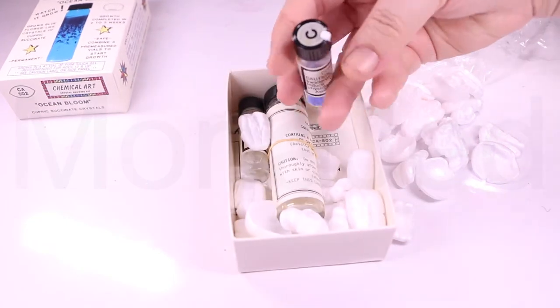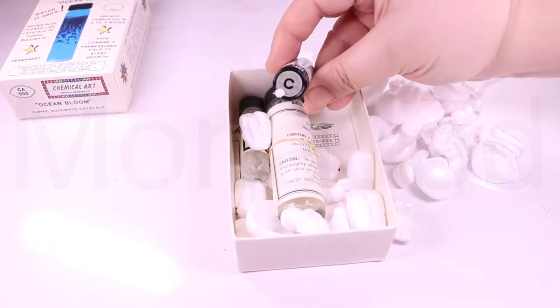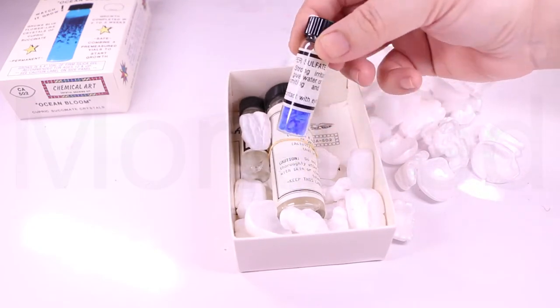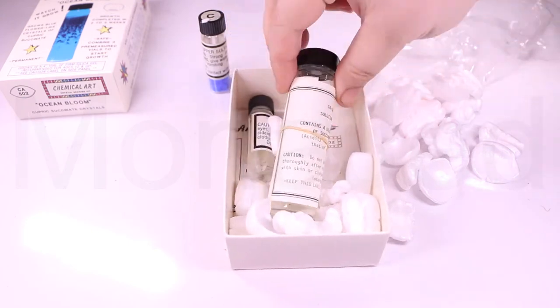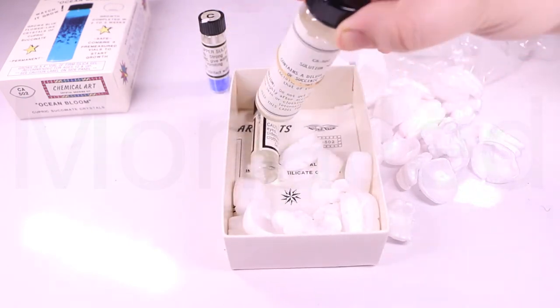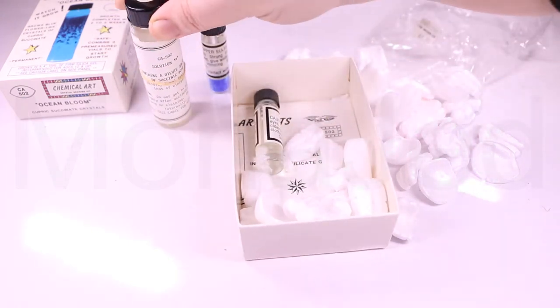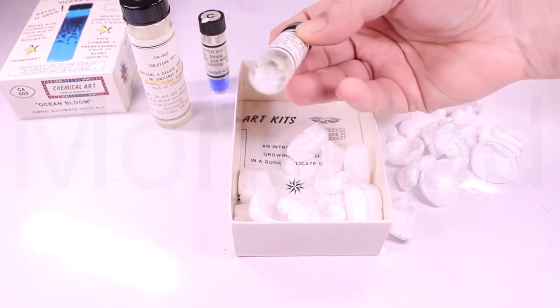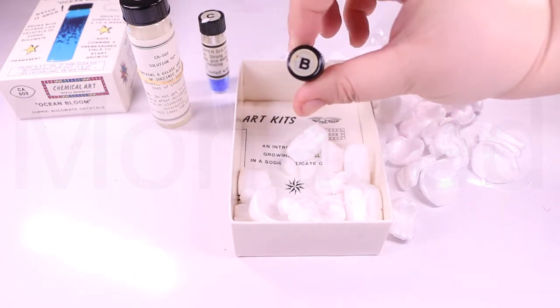So, what are the contents of the kit? This kit contains three vials of chemicals that are labeled A, B and C. Vial A contains a weak solution of succinic acid about the strength of vinegar. Vial B contains sodium silicate solution. Vial C contains copper sulfate.